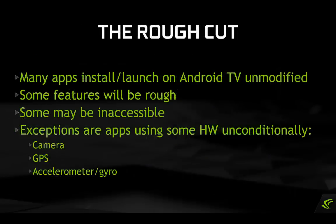Many apps will just install and run on Android TV. They may not be easy to navigate, and some features may be impossible to access initially, but you'll get an idea. The notable exceptions are apps that use hardware features unconditionally, without checking at runtime for their availability — especially camera, GPS, or accelerometer. Those apps may crash on launch and need modification to make these features optional.